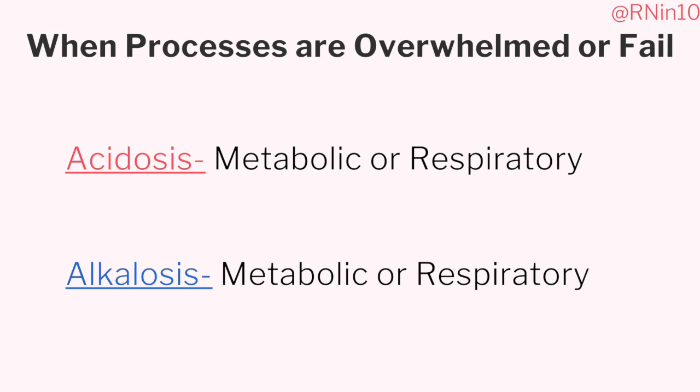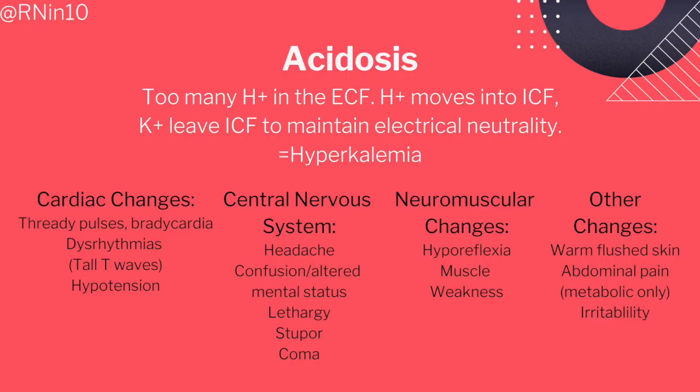But what if those processes fail? What if the patient has COPD and can't get rid of CO2? What if they have kidney failure and can't filter electrolytes correctly? That's when the patient is at risk for acidosis or alkalosis, and there are two types for each — respiratory or metabolic — because we have two types of acids: carbonic acid and metabolic acids.